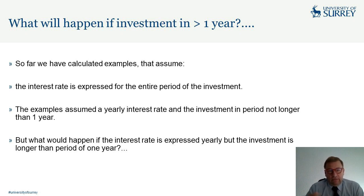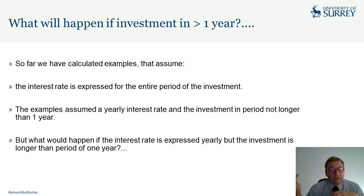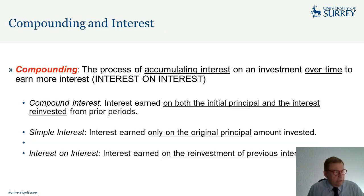Since economics normally operates on a one-year time frame and people want returns earlier rather than later, we need a mechanism to handle multi-year investments. That mechanism is called compounding — specifically, interest on interest.